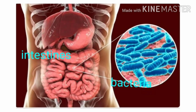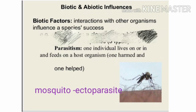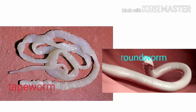Parasitism is a negative relationship in which one living being benefits while the other is at a loss. Tapeworms and roundworms living in human intestines are benefited by the humans, while humans suffer loss as their food is consumed and internal organs are harmed. These parasites produce injury in the intestine or consume the host's food.